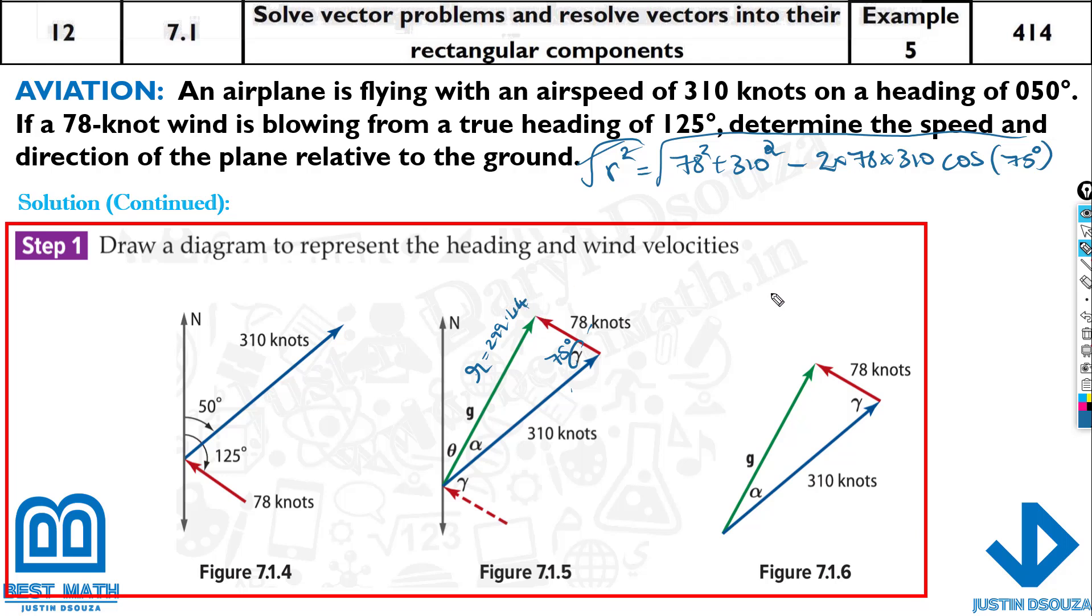You know r is 299.44. So looking at the options, you can easily eliminate the wrong options and see which magnitude has 299.44. That is one of the correct answers. But we don't know the angle theta. We need to find the speed and the direction. So speed is found out, r is the speed. Now the direction. We need to find alpha.